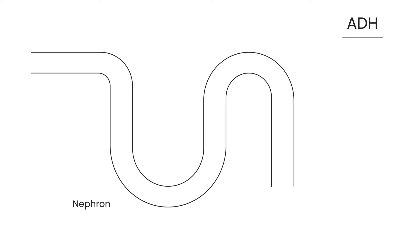I'm going to draw a diagram to help explain what ADH does in the body. This diagram is of a nephron, which is the unit component of a kidney — there are millions of them in each kidney. Each part of the nephron has a certain name, and we're going to concentrate on the collecting duct, where the final composition of urine is determined.